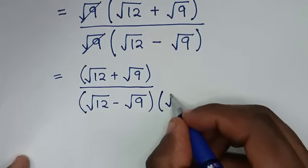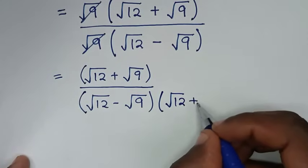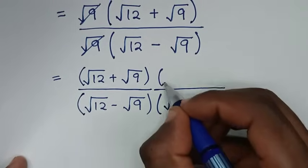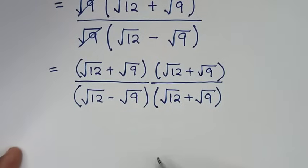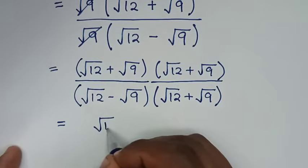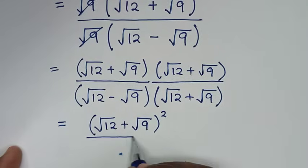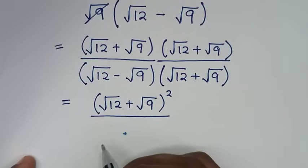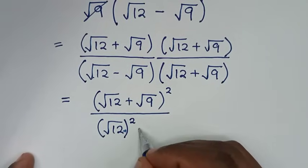We will rationalize the denominator. We multiply both numerator and denominator by (square root of 12 plus square root of 9). The numerator becomes (square root of 12 plus square root of 9) squared, and the denominator is in the form (a minus b)(a plus b), which is a difference of squares: (square root of 12) squared minus (square root of 9) squared.